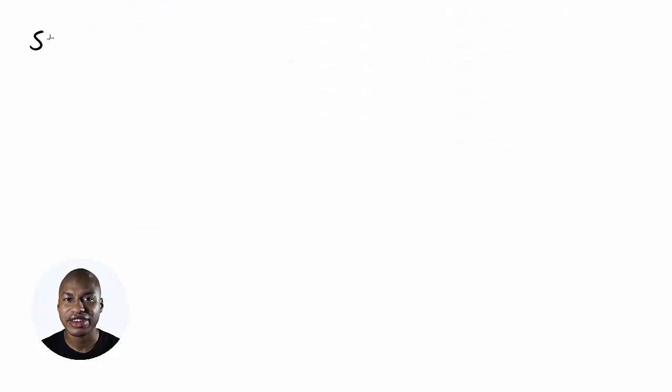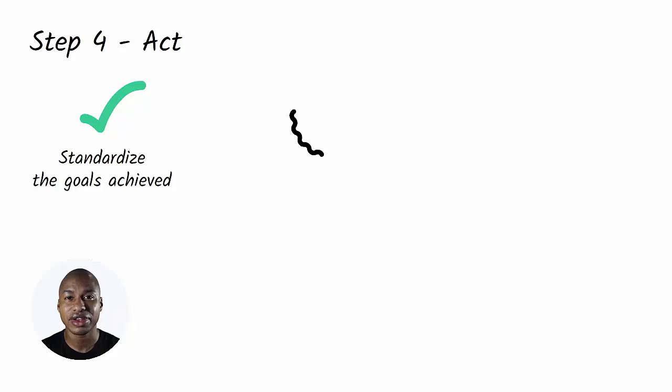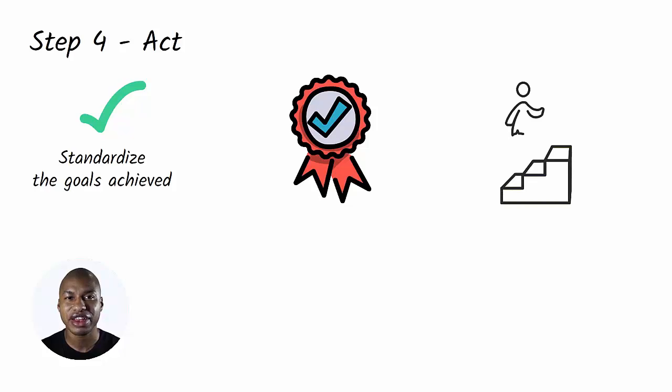Step 4. Act. This step is also called adjust. If we have worked well, we will be able to standardize the goals achieved. The new standard achieved must reflect the best process currently obtainable. Clearly, the process will not be frozen forever. You have to think of improvement as a continuous movement from a standard to a better standard. This continuous cycle is triggered by another iteration of the PDCA cycle.